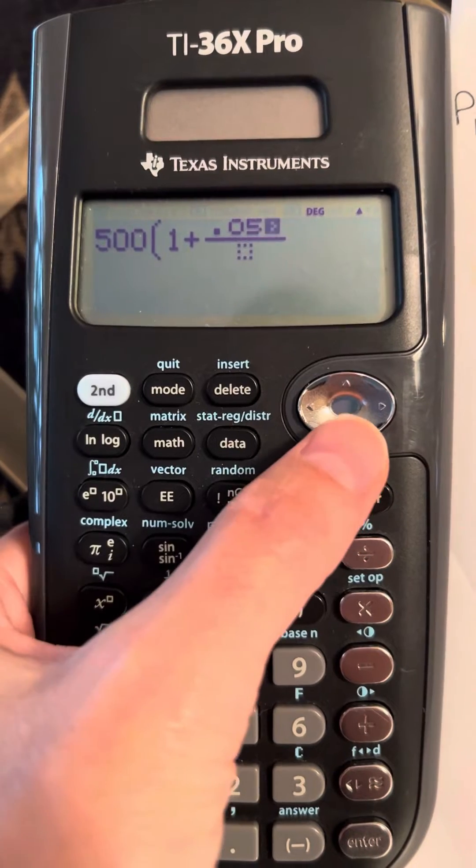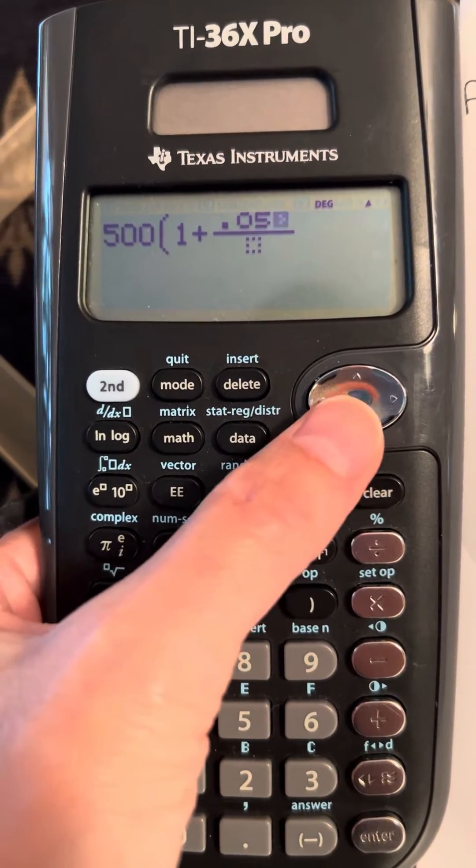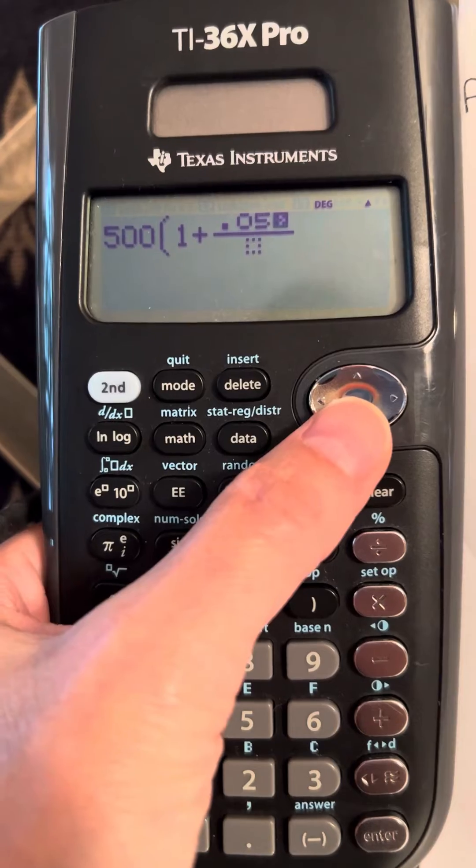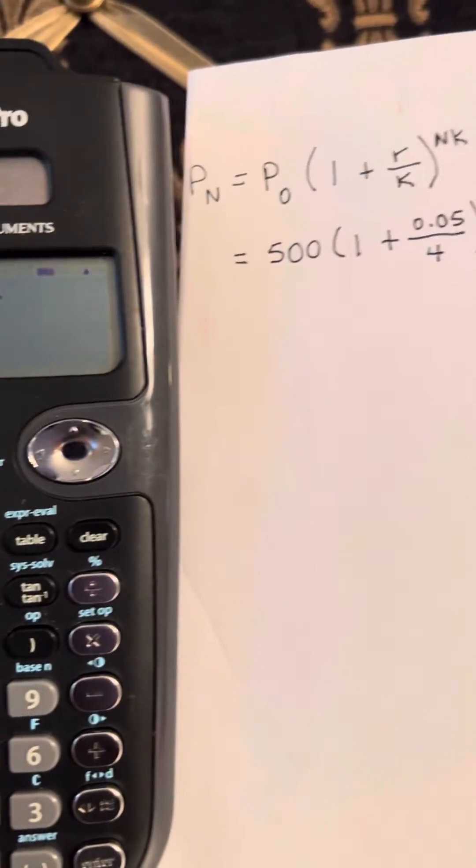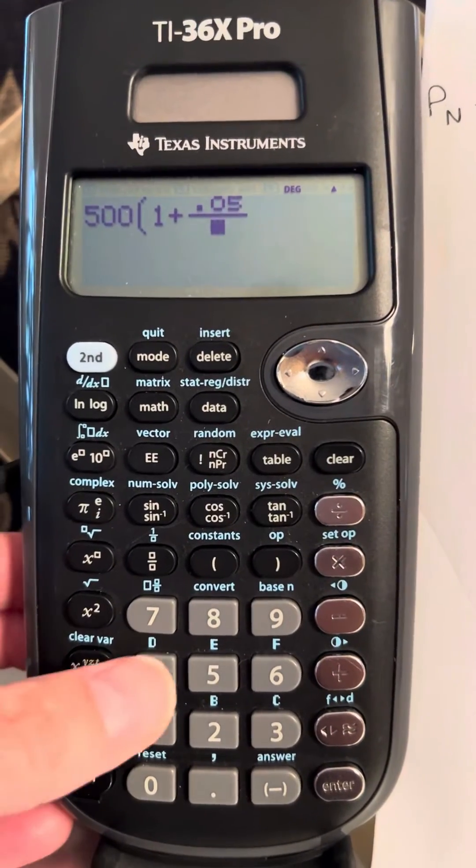And then this silver button here allows us to move our cursor. So I'm going to move my cursor down to the denominator, and we are dividing by 4 because it's compounded quarterly.